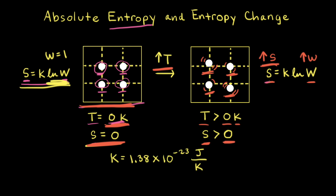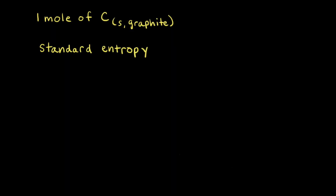We can get the units for entropy from the Boltzmann constant k, which is equal to 1.38 × 10⁻²³ joules per Kelvin. So we'll use joules per Kelvin as the units for entropy.